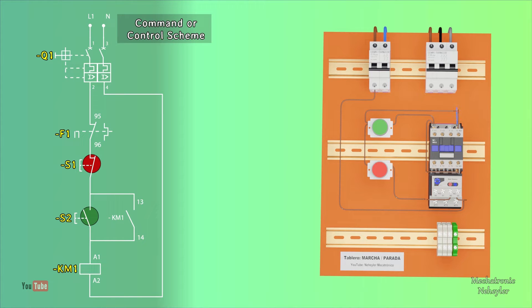Finally, from terminal A2 of the contactor, it is connected and taken to the supply neutral. So that would be all the wiring that would be done for the control part.